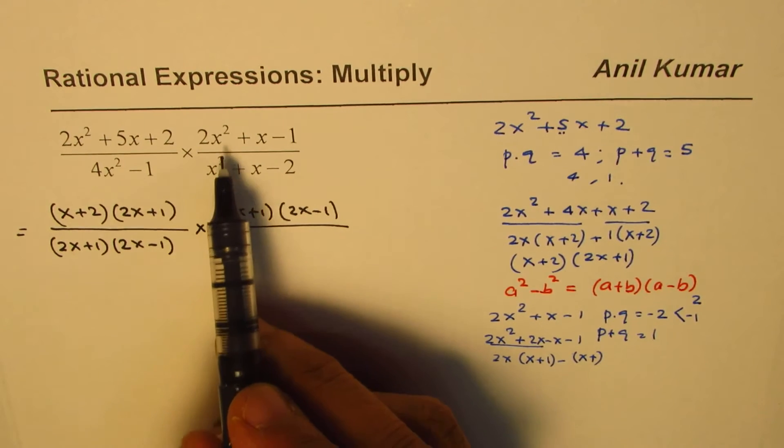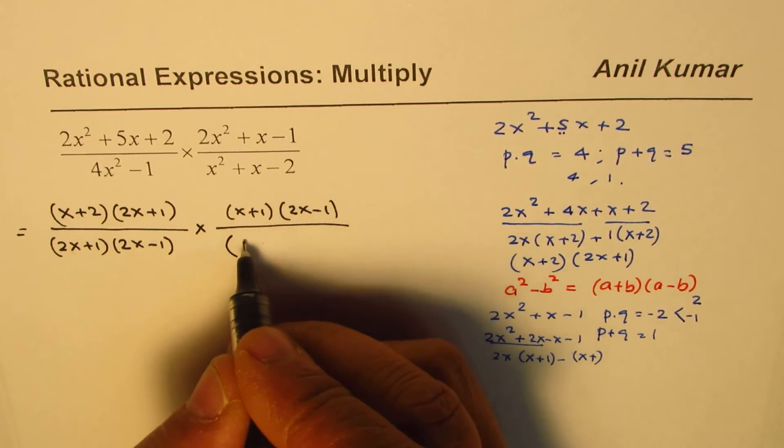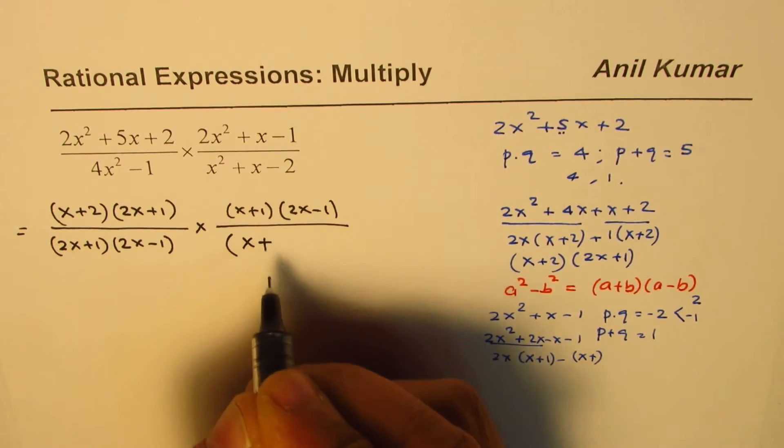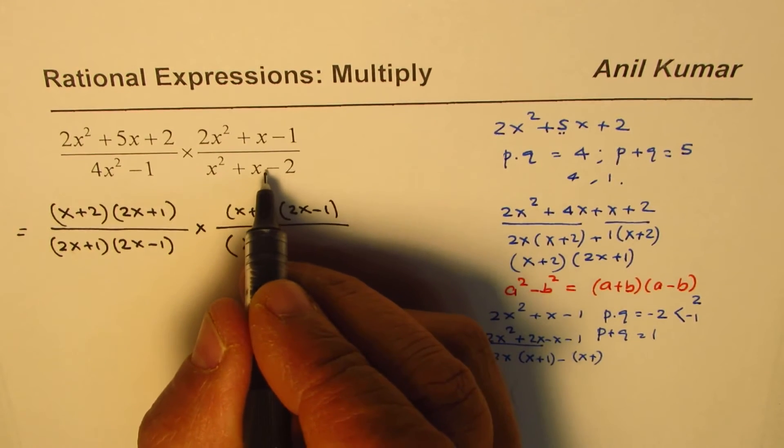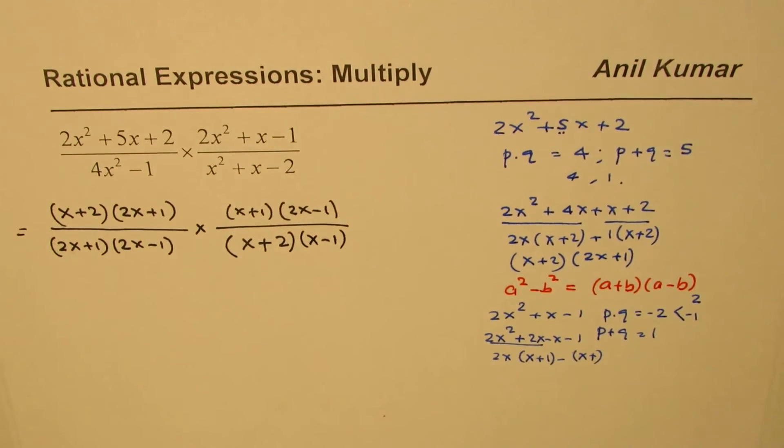Now, let's look into this one, which is x squared plus x minus 2. So, adding, we have to get plus 1. So, I could write this as x plus 2 times minus 1. So, plus 2 times x minus 1 gives us the factor.